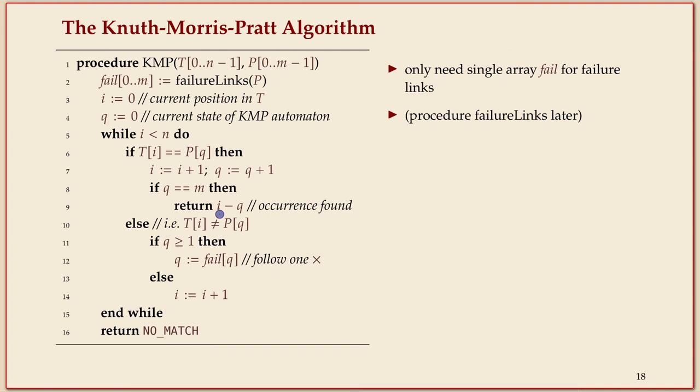If we reach that way the accepting state we can return the occurrence that we found. And again i is the position in the text that we compare so you have to go back q steps to get the return value, which is supposed to be the starting position of the pattern in the text.